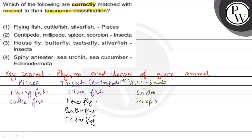Aur last, hum baat karenge Echinodermata ke baare mein. Echinodermata mein kaun aayega? Sea urchin aur sea cucumber aayega. Aur last, jo spiny anteater hai, wo kya hai? Ek mammal hai.